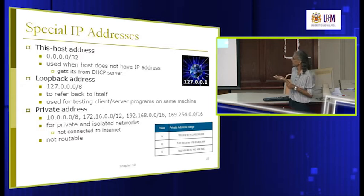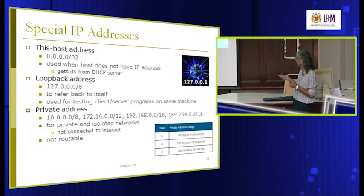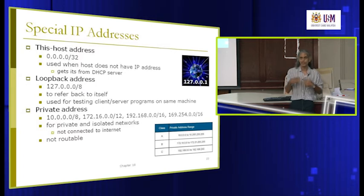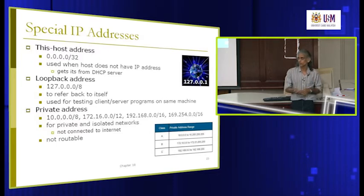Private addresses cannot go to the internet — if a router receives a packet with these address ranges, it will drop the packet and not forward it to the internet. That's what private network means — it's like a private conversation that stays within the local network.